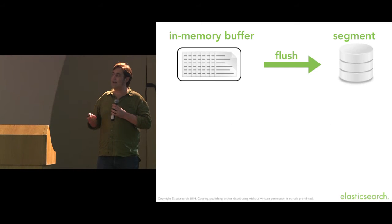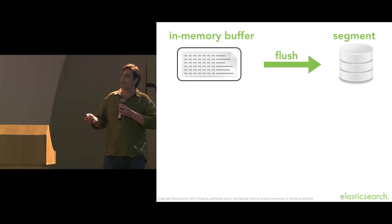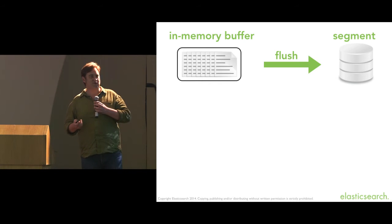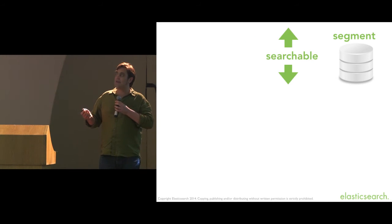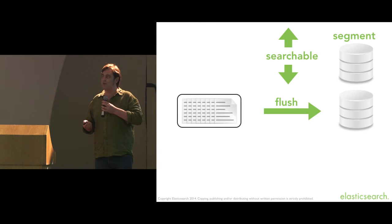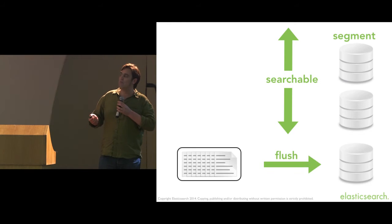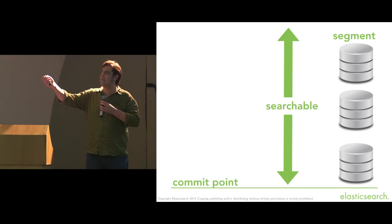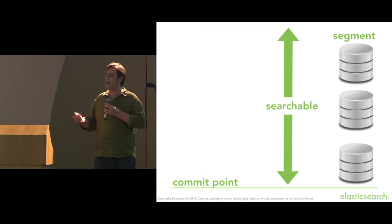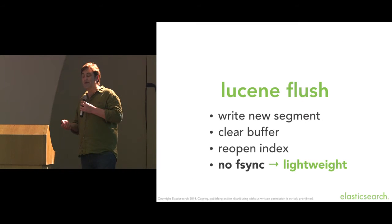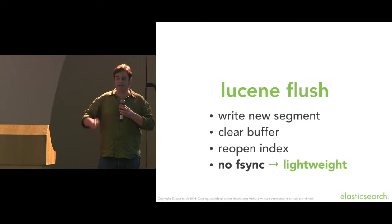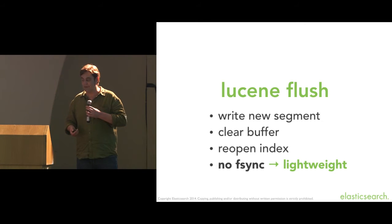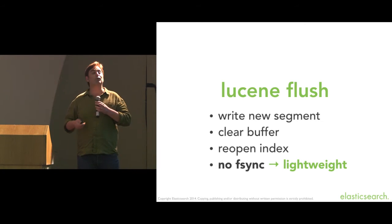What we want is near real-time search. So instead of committing, we do something called a Lucene flush, which writes a segment to disk and makes it searchable — but notice there's no commit point and the segment hasn't been f-synced yet. We carry on indexing more documents, flush, searchable, more documents, flush, searchable. Then at some stage we do a commit — the heavy thing that f-syncs to disk — and all the data we've written is safely stored on disk. A flush writes a new segment, clears the in-memory buffer, and reopens the index, but with no f-sync, so it's lightweight and we can do it often.